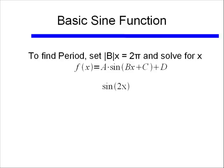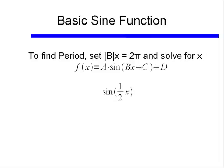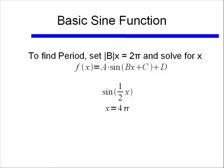For example, with sine(2x), set 2x = 2π, divide both sides by 2, and get x = π. So the period is π. For sine(½x), set ½x = 2π, multiply both sides by 2, and get x = 4π. So the period is 4π.